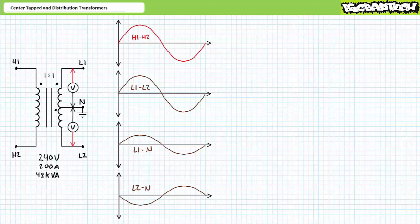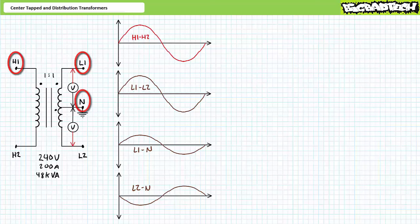Importantly, ground referencing the center tap does not change the location of the phase dots. When H1 is higher or more positive than H2, L1 is higher or more positive than N, and N is higher or more positive than L2. This also means L2 is lower or more negative than N. When N is ground referenced and voltmeter two uses the neutral connection as the reference, it can be said when H1 to H2 and L1 to L2 peak positively,